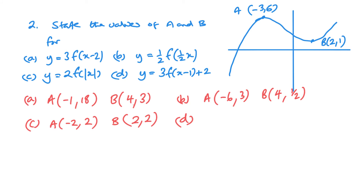There's quite a lot happening in this one — transformations both inside and outside. Applying them: 1 square to the right means the x becomes −2. The x is not affected by what's happening with y. For y: apply the stretch first then the translation, so 6 times 3 is 18, plus 2 is 20. For point b: horizontal shift gives x = 3, then 1 times 3 is 3, plus 2 is 5.